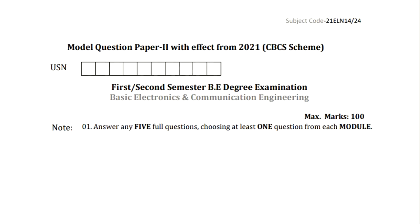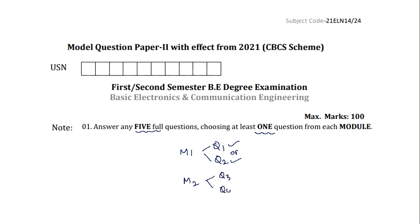In the question paper you will have 10 questions. Out of 10 you need to answer 5 full questions. We need to choose one question from each module. Module 1 will be covered in questions 1 and 2 — you need to answer question 1 or question 2. Similarly module 2 covers questions 3 and 4; out of these two you need to answer any one. Likewise you choose one from each module.